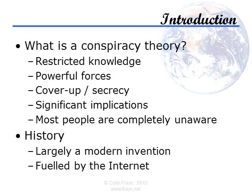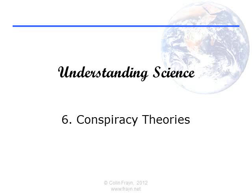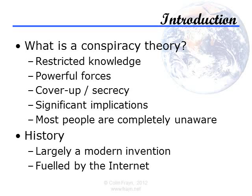Let's start with the definition of a conspiracy theory. I want to introduce five properties which are the case of pretty much all conspiracy theories. It's possible that some will only fulfil three or four of these, but most conspiracies fulfil all five. Firstly, conspiracy theories concern restricted knowledge — that is, knowledge that is not publicly acknowledged by the organisations who are the subject of the alleged conspiracy. Yet this knowledge has been discovered by a small group of people, sometimes growing into a larger fraction of the population.